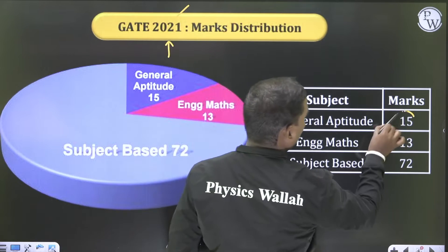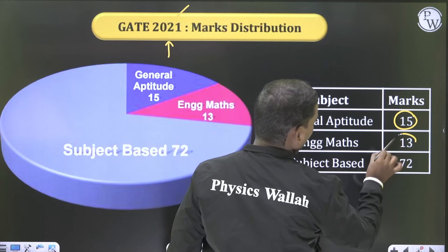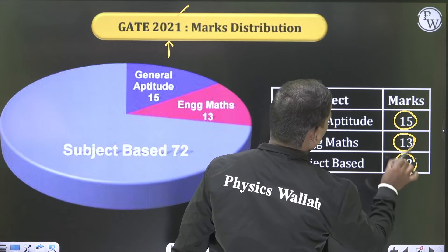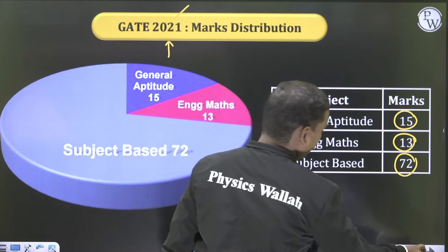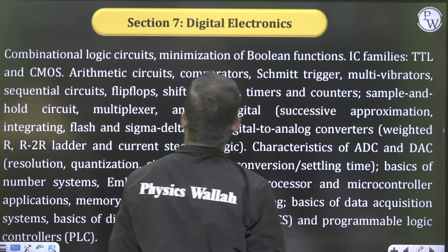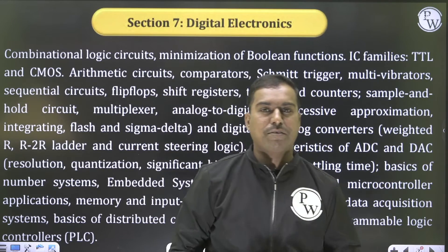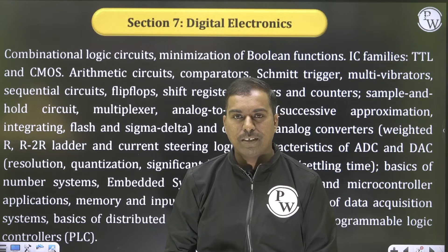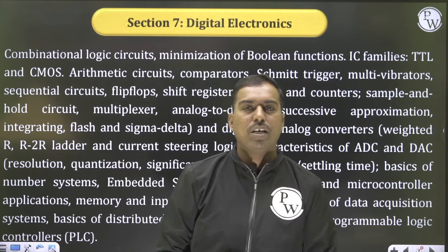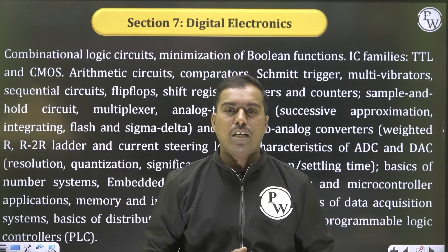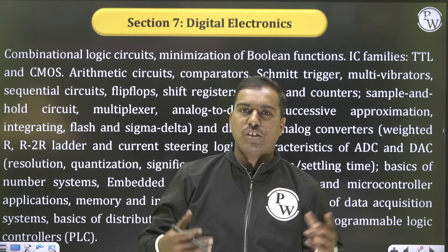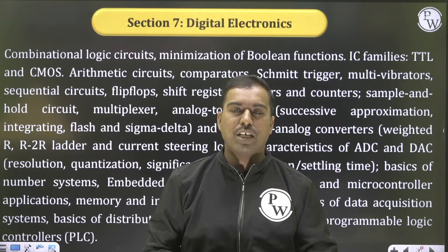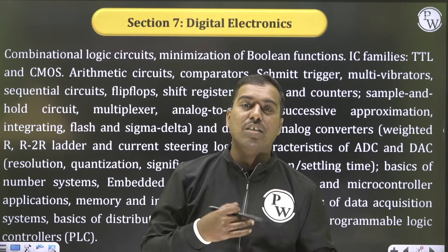Coming to the most important point — distribution of marks. From Gate 2021 onwards, the strategy they follow is: general aptitude 15 marks, engineering mathematics around 13 marks, subject-based 72 marks. Now, what are the subjects that are differing? This is most important for instrumentation students, electrical students, or ECE students to keep in mind — there are certain subjects with extra syllabus added.